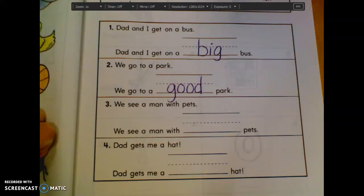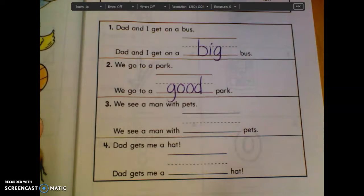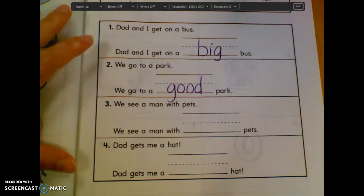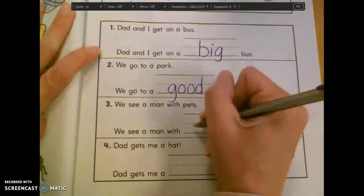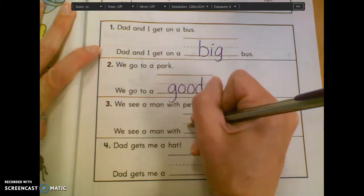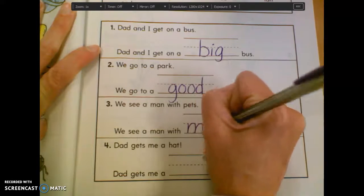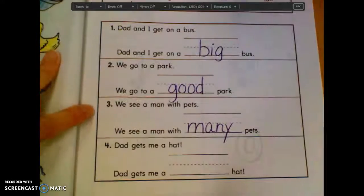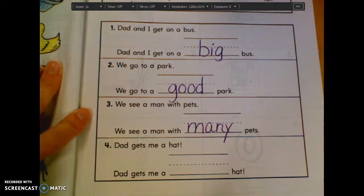Number three. We see a man with pets. We see a man with blank pets. Christian K. With what? What'd you say? Oh, let's think of a different one. I feel like there's a better one. Logan, what about you? I guess we could use funny. Yeah, we could say. Yeah, or many. I think many would probably be better. We see a man with many pets. Yeah, let's do many. Don't forget to please raise your hands, okay? I know that you want to tell an answer, but remember to raise your hands so you don't shout out.